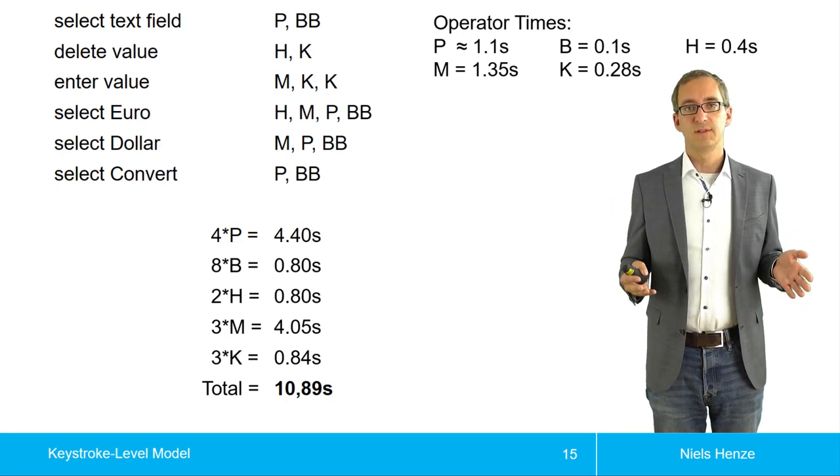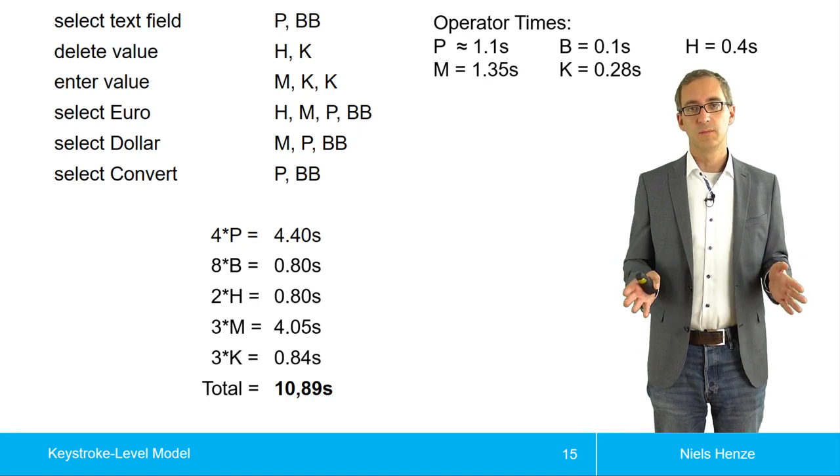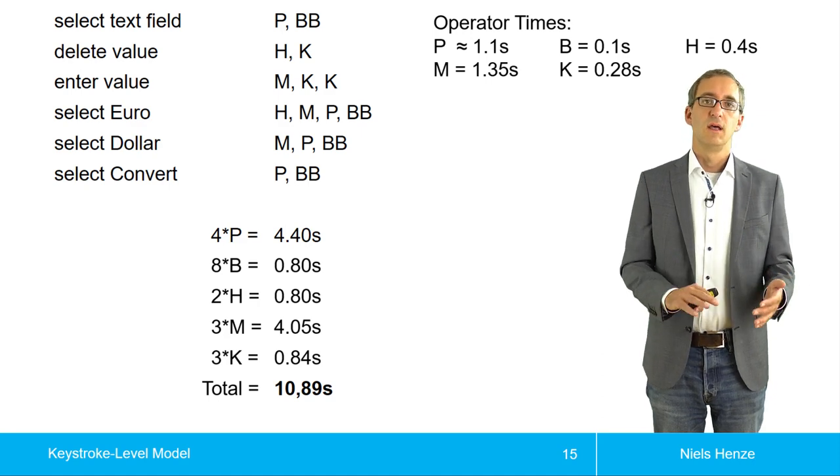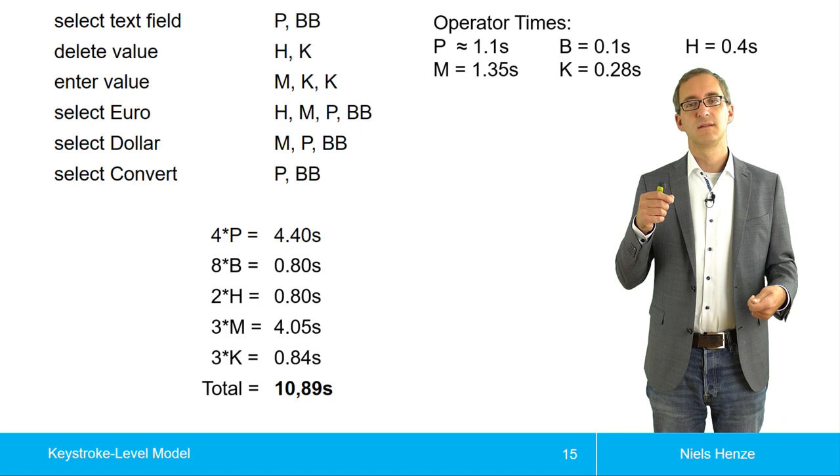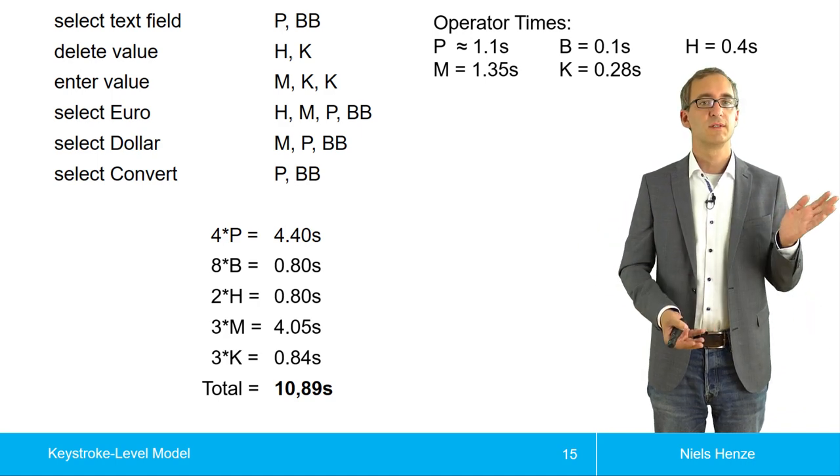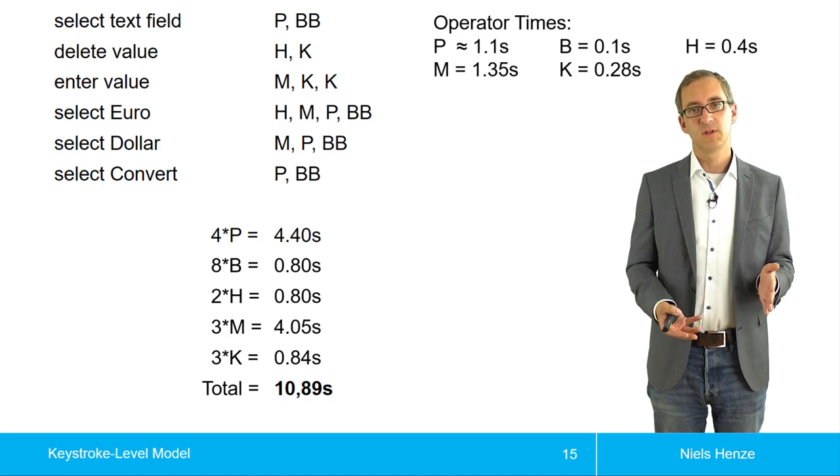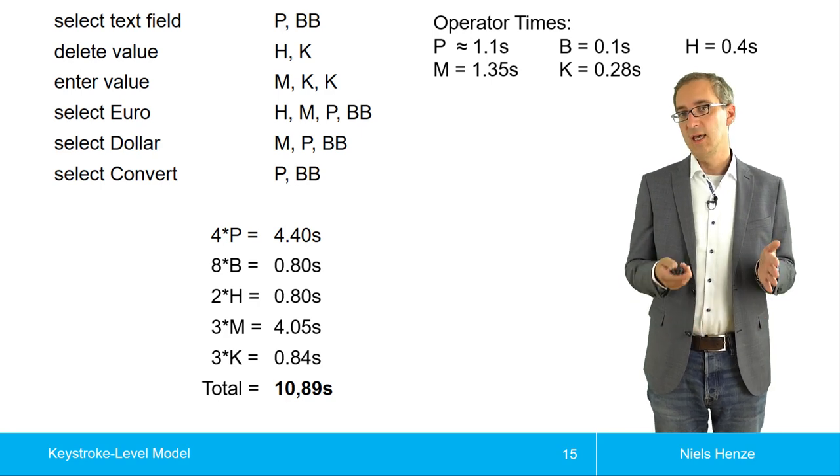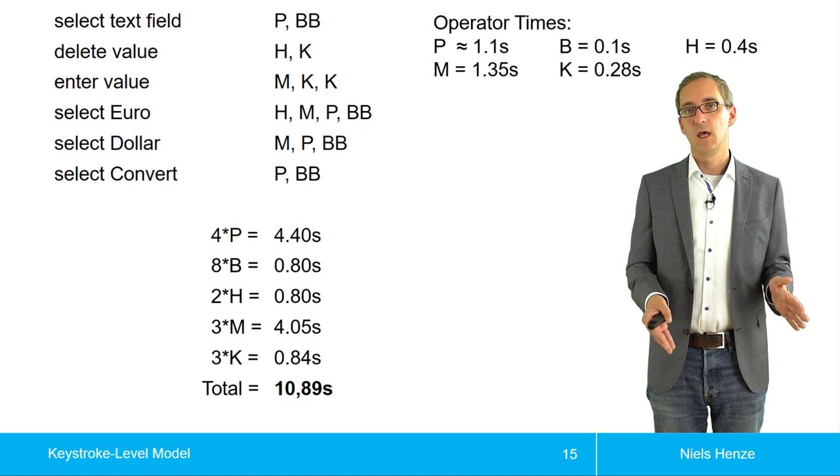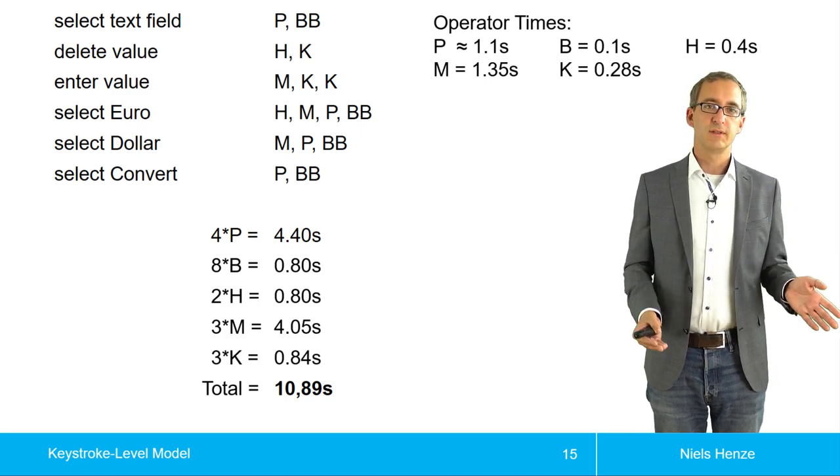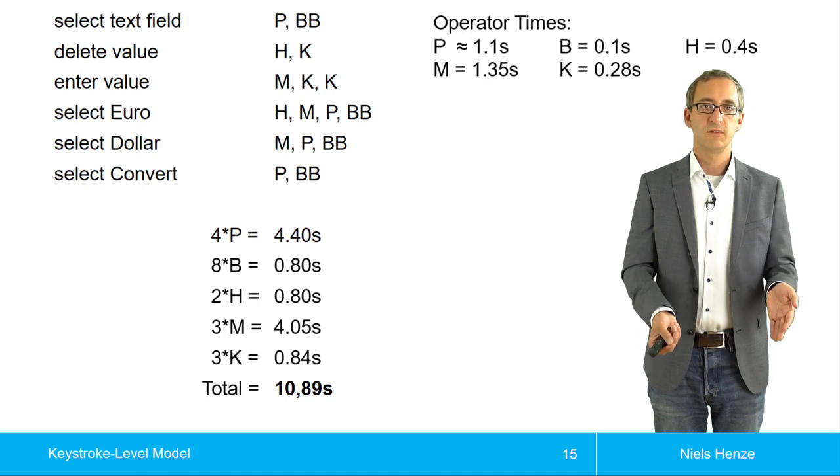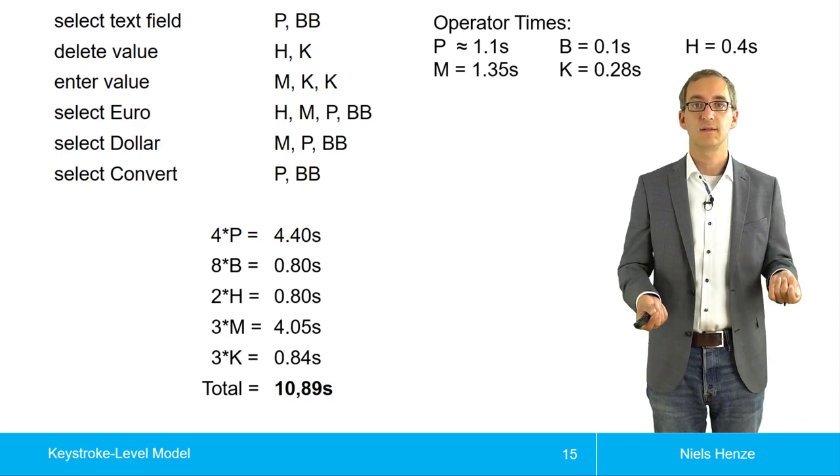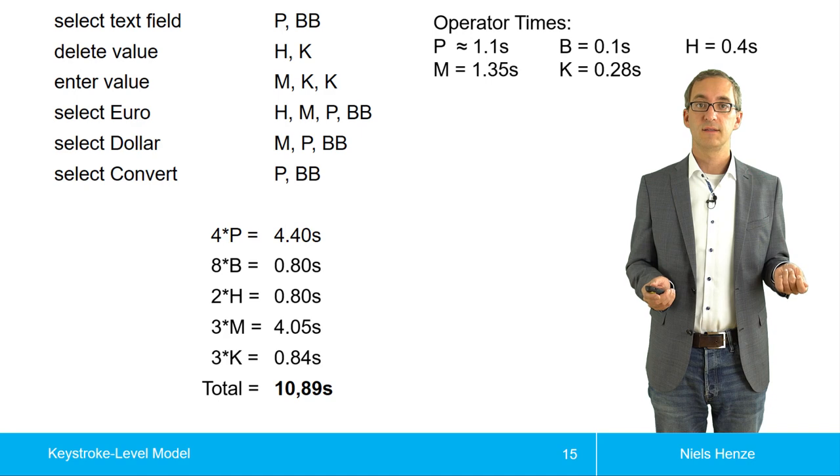Now if we would run an actual study, it's unlikely that our participants would reach 10.89 seconds precisely. That's very unlikely, and even if that would be the average, there would be participants that are faster and slower. But what's nice about KLM is that it gives us an estimate. What's especially nice is that it enables us to compare different interfaces. Maybe my participants are especially well trained, so they are much faster than the average person, so their values would be much lower.